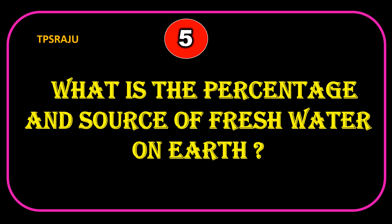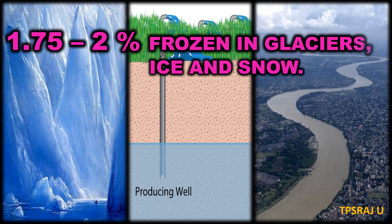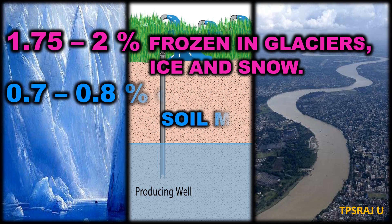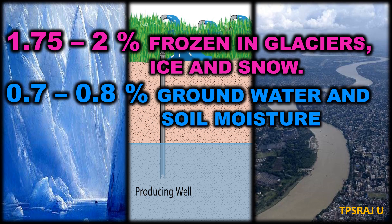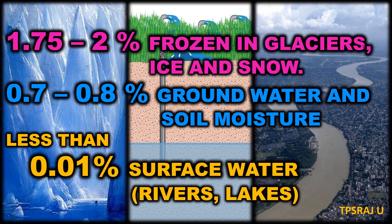What is the percentage and source of fresh water on Earth? 1.75 to 2% is frozen in glaciers, ice and snow. 0.7 to 0.8% is groundwater and soil moisture. Less than 0.01% is surface water such as rivers, lakes, etc.